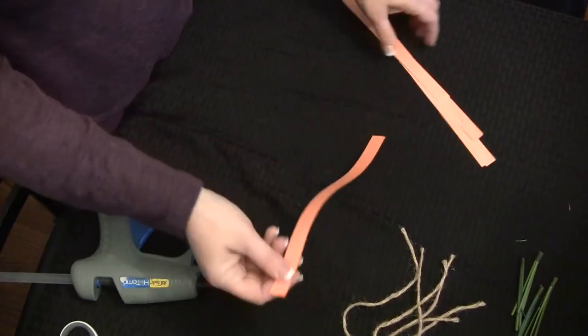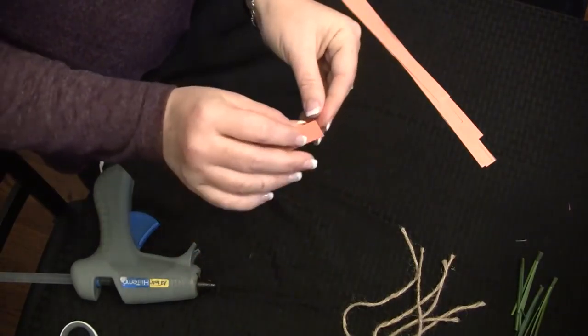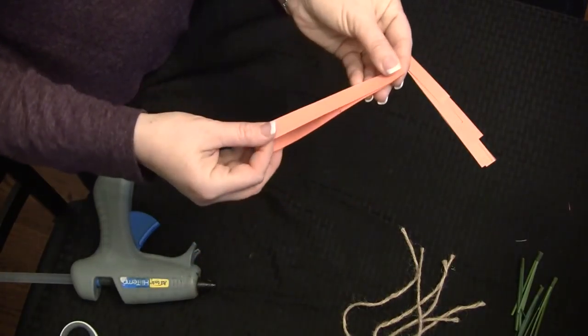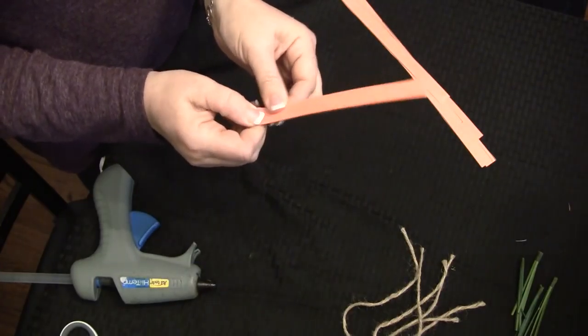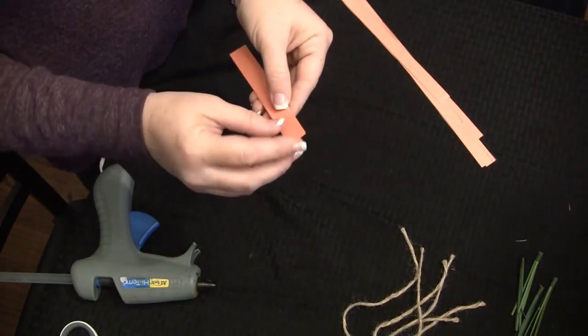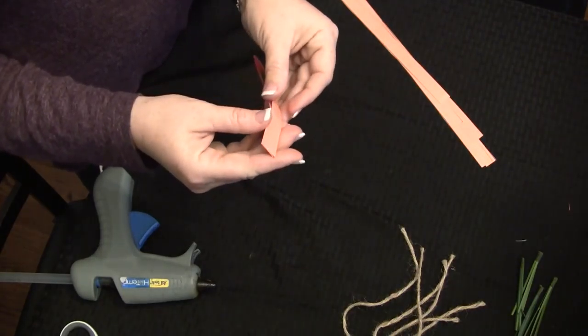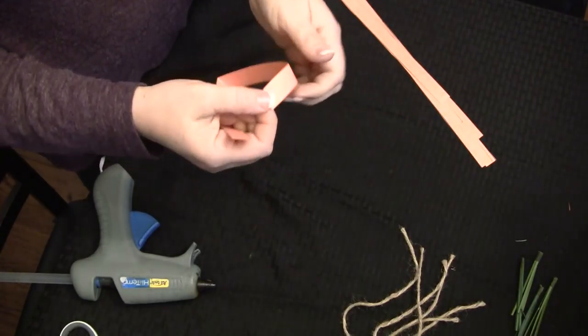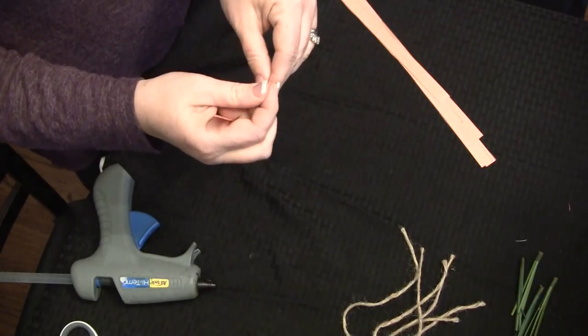So what we're going to do is we're going to take these strips and first fold it in half to create a V. Then at the top you're going to fold about an inch and a half down to create two sides. And then we're going to fold these and these are going to be the top of our carrot.